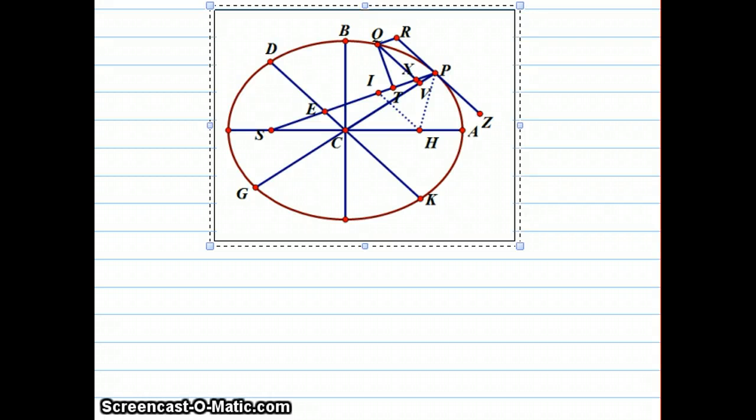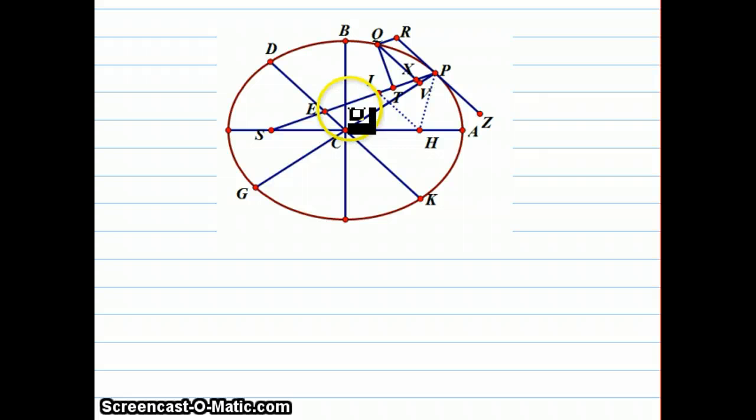This is part six of my explanation of Newton's Principia. He is going to create a five-stage proof here. Newton is going to start by showing that in this diagram, ES is the same length as EI. I'll write that: ES is congruent to EI.